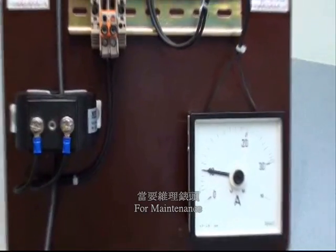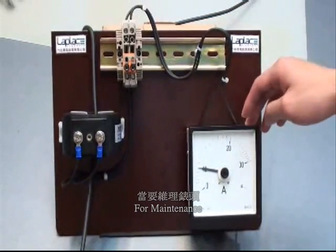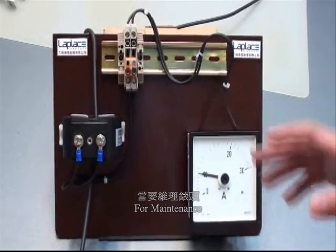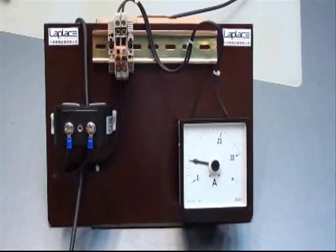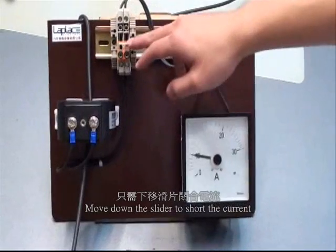However, for maintenance, if the meter fails, we don't need to switch off all the electric power. We just move down the cross-connection slider.